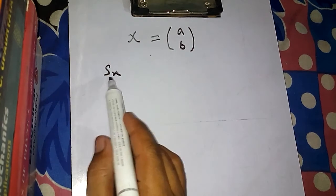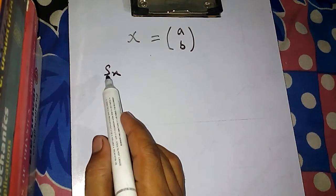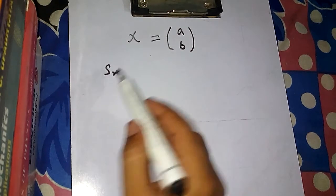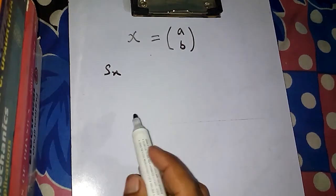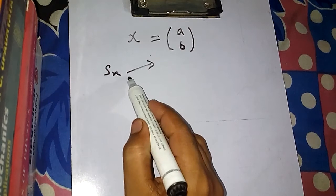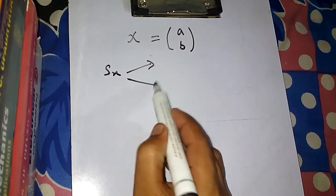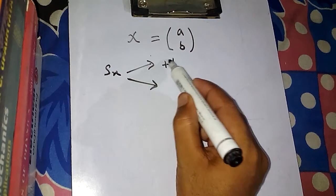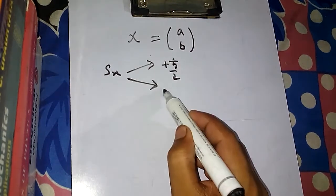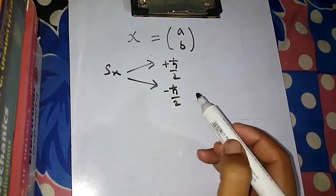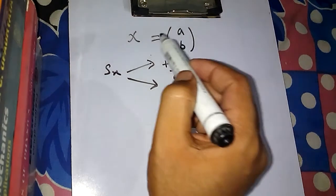So if we measure the X component of the spin on this spin function, what are the results we will get? We will get only one result at a time, but there are two possibilities. At maximum we can get two results: either we will get plus ℏ/2 or we will get minus ℏ/2. These are the two possibilities when you measure S_x on this spin state.